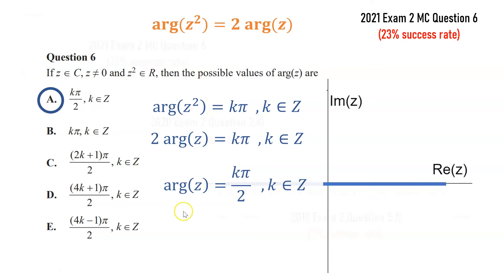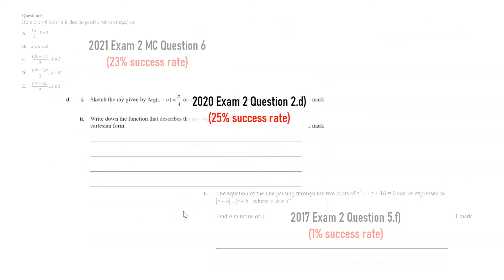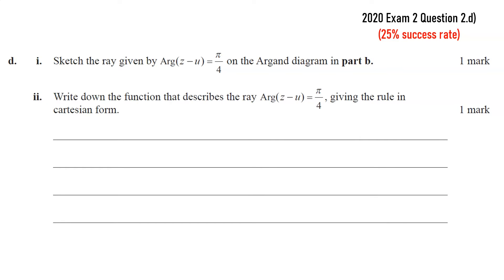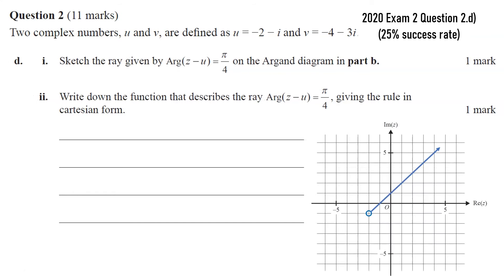Alright, so let's have a look at another question. And this one is about sketching a ray, and then writing down a function that describes the ray. So to start with, I mean this is part d, so earlier in the question we were given the complex numbers u and v, and we need u here, which is -2 - i. So part 1 was to sketch the ray, and so we're starting from the point -2 comma -1, and we're going π/4, so we're going like 45 degrees from the positive x-axis.